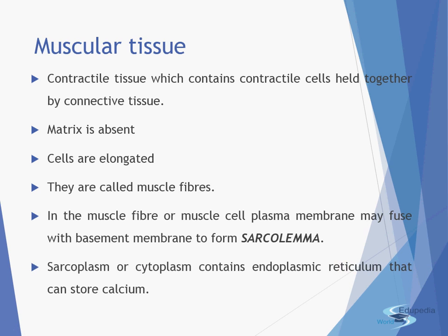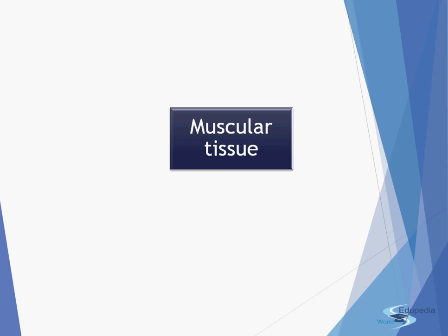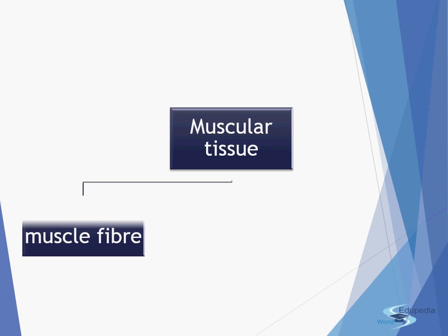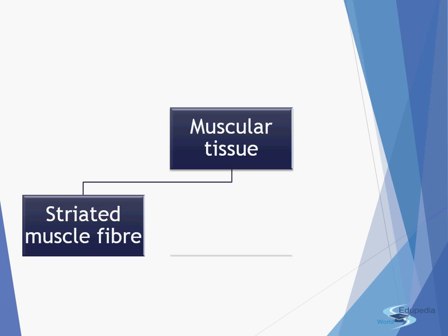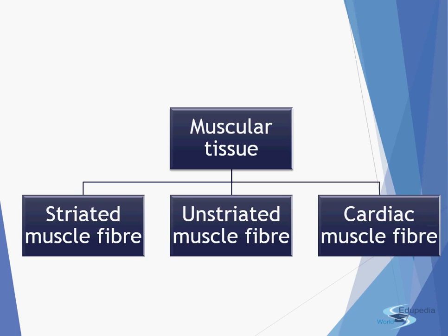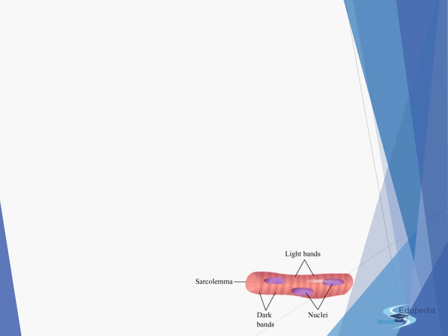The sarcoplasm, or cytoplasm, contains the endoplasmic reticulum that can store calcium. So the cytoplasm of muscular tissue is also known as the sarcoplasm, and it has the ability to store calcium. Now, muscular tissues can be of the following three types: striated muscle fibers, unstriated muscle fibers, and cardiac muscle fibers.